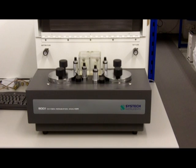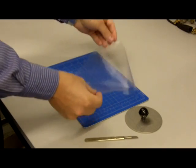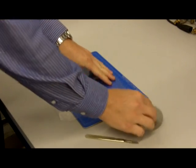Now let's look at cutting a film sample and starting a test. First choose the film you want to test, then place it on a clean cutting surface.